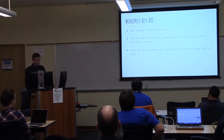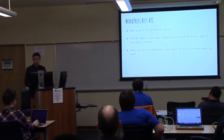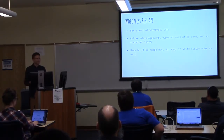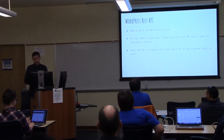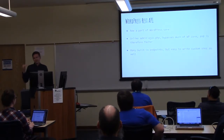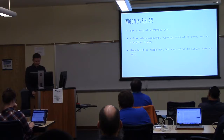The WordPress REST API is now part of WordPress Core. Admin Ajax is kind of the old way you might do Ajax with your WordPress theme or plugin, but unlike Admin Ajax, the WordPress API bypasses a lot of things. Delicious Brains has a really good blog post comparing all the steps involved in an Admin Ajax request versus a WordPress API request. The WordPress REST API has a lot of built-in endpoints, and it's super easy to write custom ones as well.